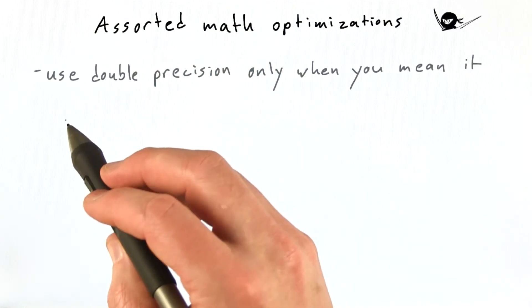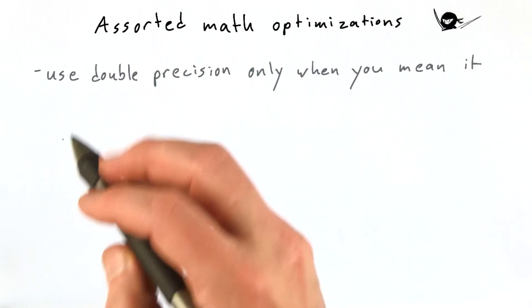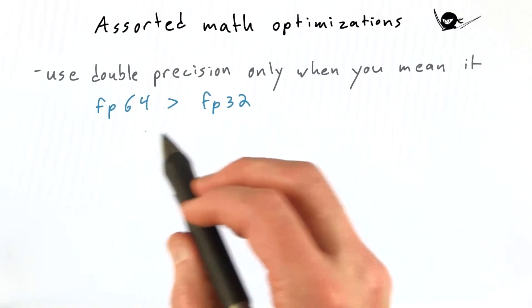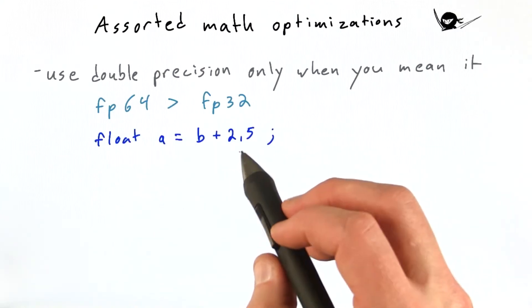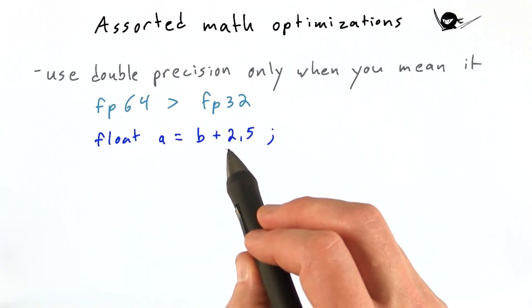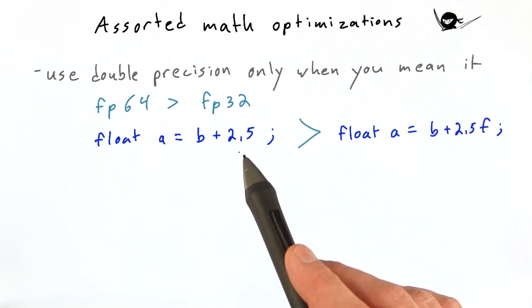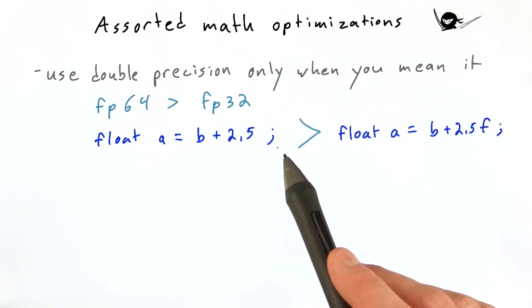So the first to keep in mind is use double precision only when you really mean it. 64-bit math is slower than 32-bit math, but it's easy to forget that floating point literals, like 2.5 here, are interpreted as fp64 unless you add the f suffix.